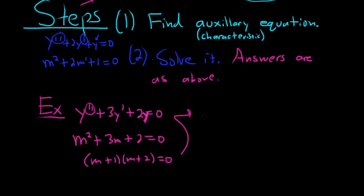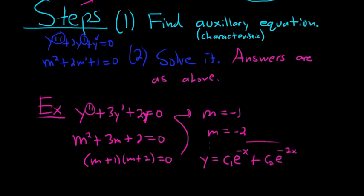We have distinct real roots. So the answer would be y equals c1 e to the m1, so e to the negative x, plus c2 e to the other one, so e to the negative 2x. So that would be the case of distinct real roots.